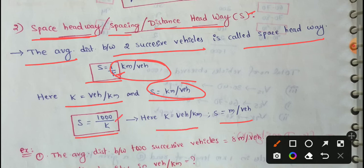So here K equals vehicles per kilometer, S equals meter per vehicle. So these are the units for space headway.